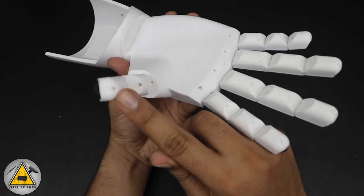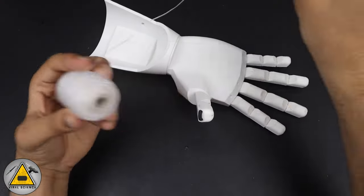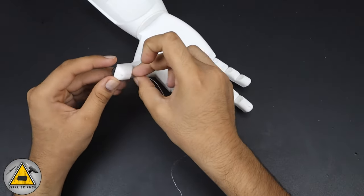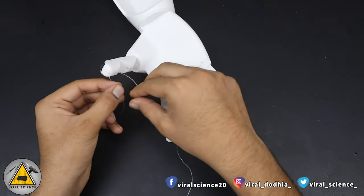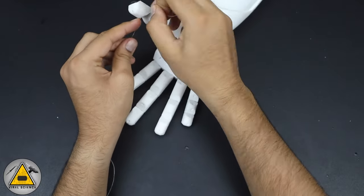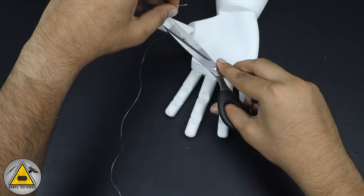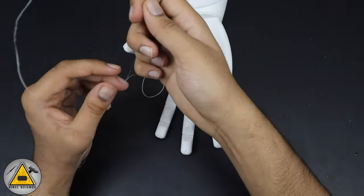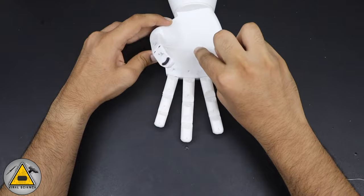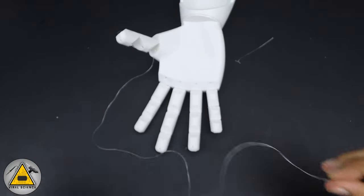So now after 5 minutes it dried up and it was stuck properly. So now we'll connect the transparent string to each of the fingers. We'll take a piece of it and we'll pass from the top joint of the thumb and we'll tie a knot over there. And now we'll pass the string from the respective corresponding holes and at last from the hand. And from here we'll get the string at the bottom where we'll be connecting the servo motors.